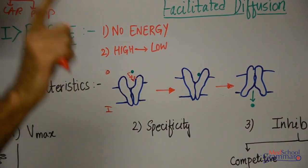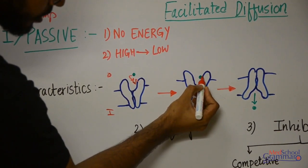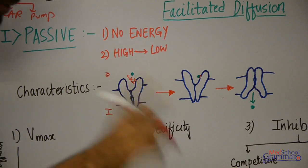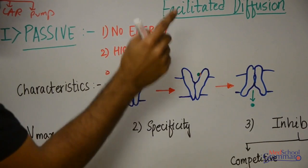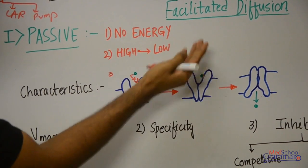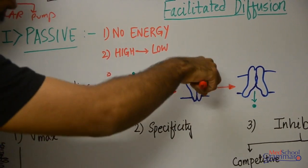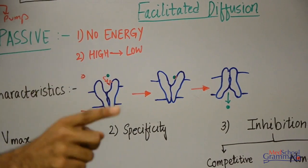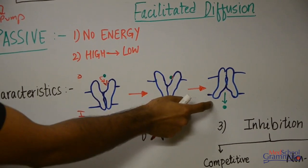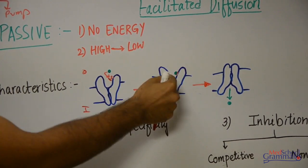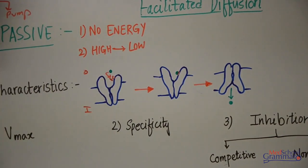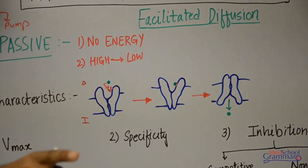The receptor on the carrier protein is now bound with the molecule to be diffused. This binding causes conformational changes in the structure of the carrier protein. The carrier protein, which was open halfway on one side, now undergoes conformational changes and opens halfway on the other side. It remains open only halfway — that's what makes it a carrier protein; if it remained open throughout, it would be a channel. Since the binding is loose, the molecule is easily released on the other side of the membrane. This is the mechanism of facilitated diffusion.